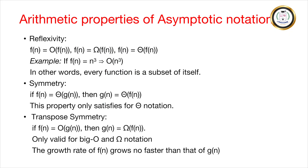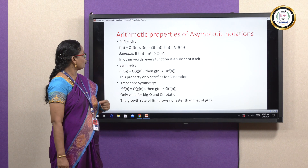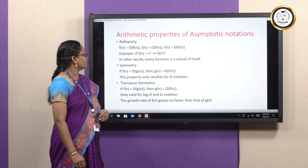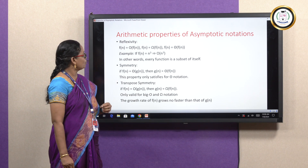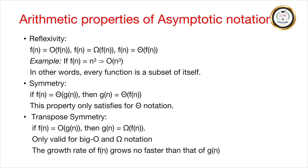Next comes the reflexivity property. This property says that every function is a subset of itself. Symbolically: f(n) = O(f(n)). Similarly, f(n) = Ω(f(n)) and f(n) = Θ(f(n)). This reflexivity property is applicable for all three notations — big O, omega, and theta.